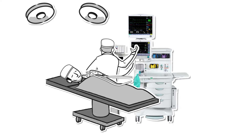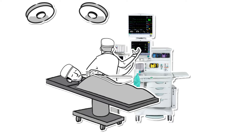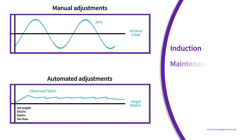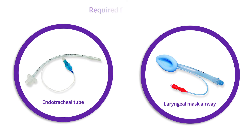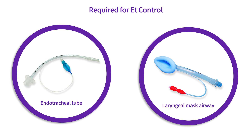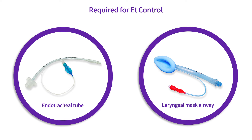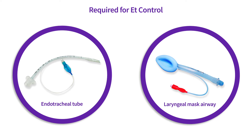End-tidal control may also help with some of the challenges involved with titrating anesthetic agents to meet desired expired anesthetic agent levels during induction, maintenance, and emergence phases of anesthesia — also known as the peaks and troughs of anesthesia. Prior to initiating end-tidal control, a controlled airway such as an endotracheal tube or laryngeal mask airway should be used.